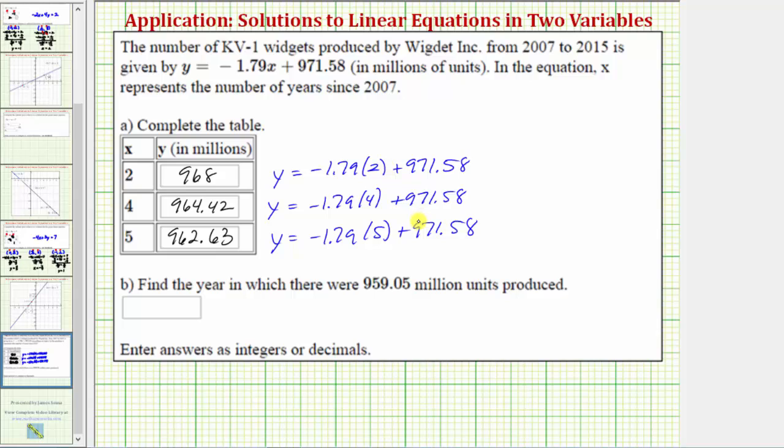And now let's look at part b. Part b asks us to find the year in which there were 959.05 million widgets produced. So notice here, they're giving us the y value. We need to find the x value. So as an ordered pair, the x value is unknown, and the y value is given as 959.05.